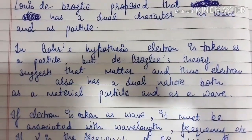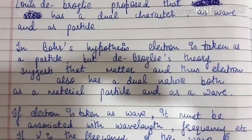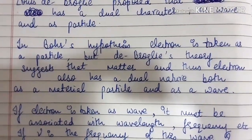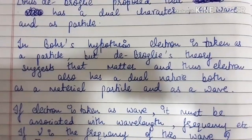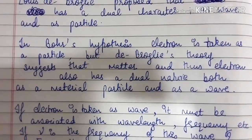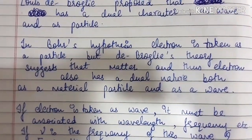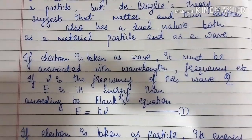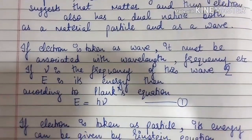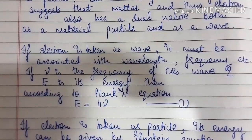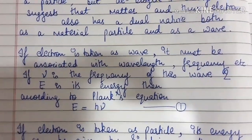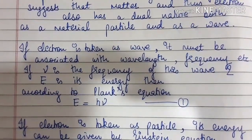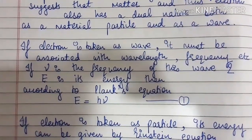In the Bohr hypothesis, the electron is taken as a particle. But de Broglie's theory suggests that matter, and thus the electron present inside the matter, also has a dual nature — both as a particle and as a wave. If the electron is taken as a wave, it must be associated with a wavelength, frequency, etc. So if we take nu as the frequency of this wave and E as its energy,